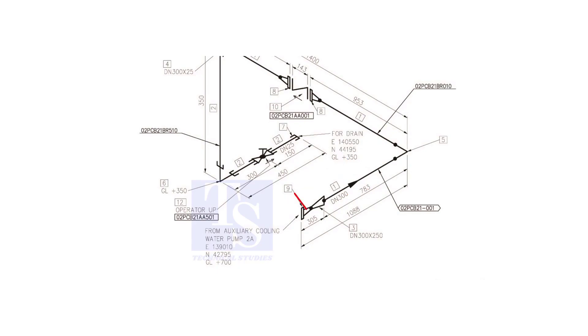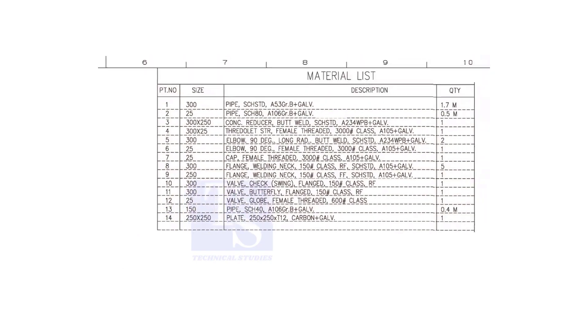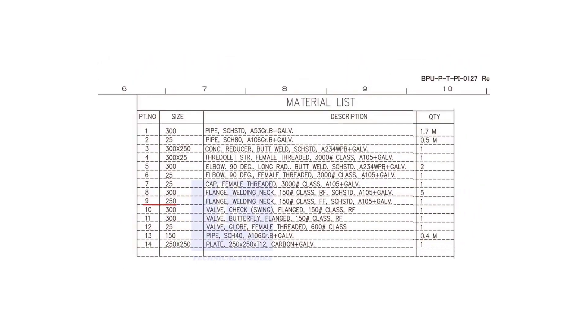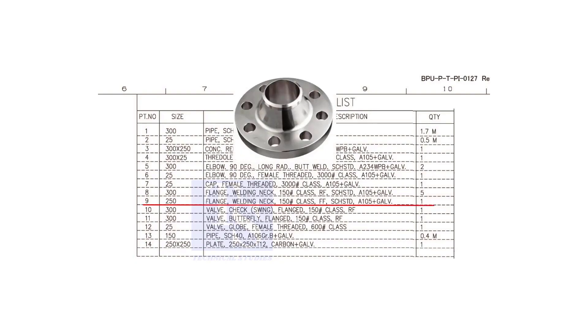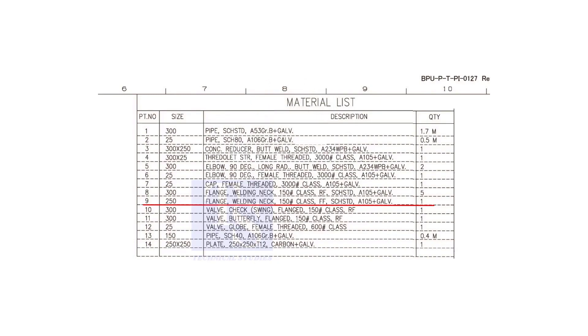Let us check the material list. What is item number 9? It is a weld neck flange. The nominal diameter is 250. The class is 150 pounds. FF means flat face. The schedule is standard, and it is galvanized.